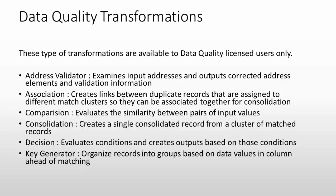The address validator transformation validates address fields — it examines input addresses and outputs corrected address elements and validation information, such as whether the address is of type V1, V2, V3, V4, or V5. It internally uses Address Doctor to validate addresses. The association transformation creates links between duplicate records assigned to different match clusters so they can be associated together for consolidation, helping to reduce duplicacy.